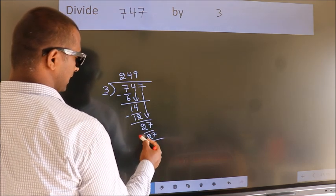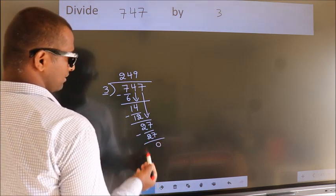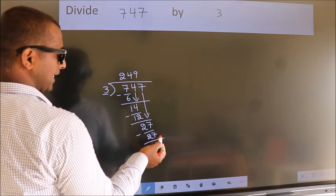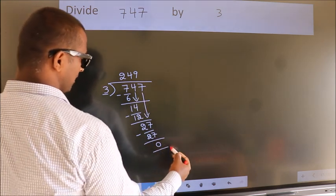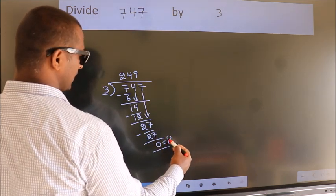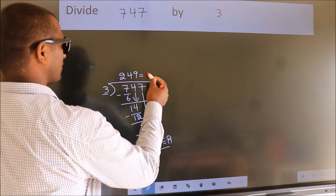Now we subtract. We get 0. No more numbers to bring it down. So we stop here. This is our remainder. This is our quotient.